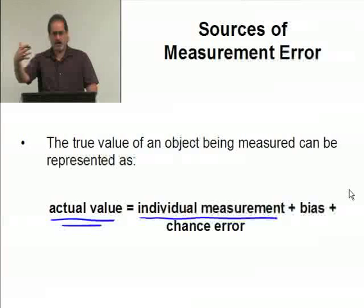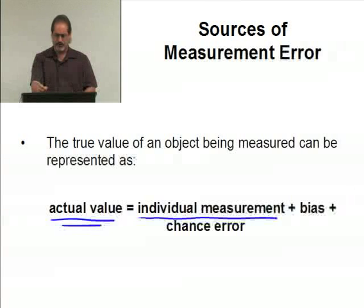We're going, right now, to talk about the idea of bias and chance error. But I want you to, in your mind at this point, just think about what the individual measurement actually is. And let's keep this idea of measuring round objects for a moment. We use that as an example throughout this particular discussion.